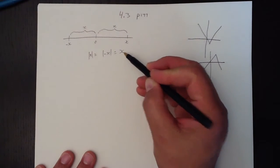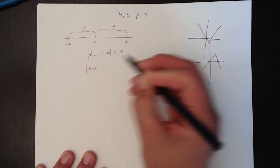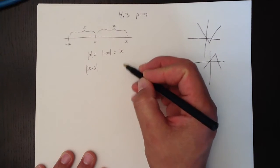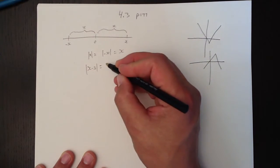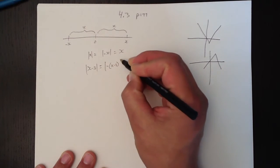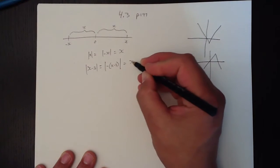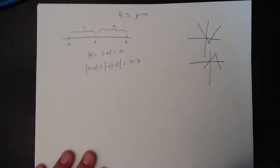So instead of just x, it could be something more complicated. It could be x minus 3. And the absolute value of x minus 3 equals the absolute value of negative x minus 3, which equals x minus 3, whatever that is. So put in whatever you want for x.